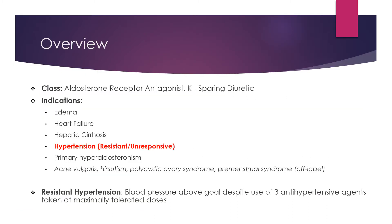Now we will be going a little more in-depth on the medication spironolactone. Spironolactone is an aldosterone receptor antagonist, or as some may refer, an anti-mineralocorticoid, MCRA or MRA. It is also classified as a potassium-sparing diuretic. Spironolactone has many labeled indications, which include edema, heart failure, hepatic cirrhosis, hypertension that is resistant or unresponsive, and primary hyperaldosteronism, as well as some off-labeled indications, which include acne vulgaris, hirsutism, polycystic ovary syndrome, and premenstrual syndrome. For this video, we will be mainly focusing on spironolactone for the treatment of hypertension.